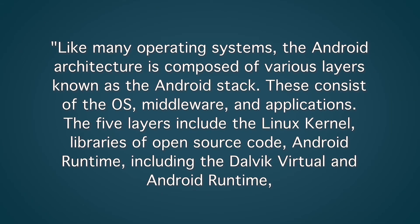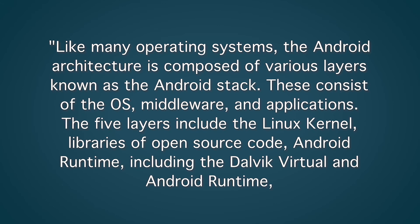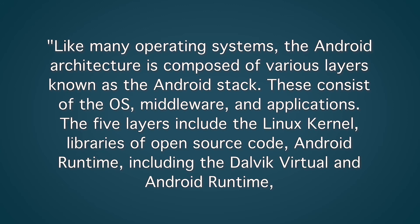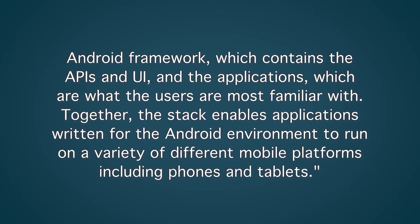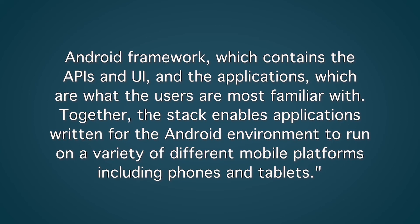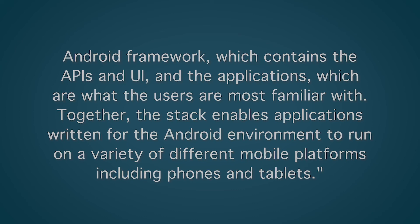Question number five. Please describe some of the main features of the Android architecture. Being able to describe the main features of the Android architecture will demonstrate your competency in this area and your knowledge of the operating system. Like many operating systems, the Android architecture is composed of various layers known as the Android stack. These consist of the operating system, middleware, and applications. The five layers include the Linux kernel, libraries of open source code, Android runtime including the Dalvik virtual machine and Android runtime, Android framework which contains the APIs and UI, and the applications, which are what users are most familiar with. Together, the stack enables applications written for the Android environment to run on a variety of different mobile platforms, including phones and tablets.